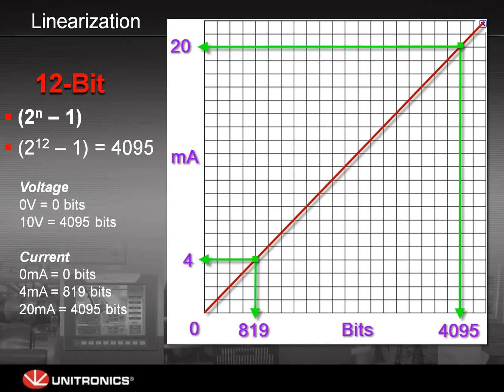The same is true for current. Zero is always equal to zero. Even if you're using a 4 to 20 milliamp sensor, your zero milliamps will be zero bits, your 4 milliamps will be 819 bits, and your 20 milliamp will be 4,095.